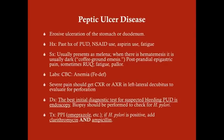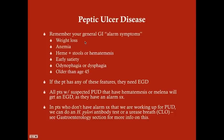Why go straight to EGD rather than a CLO test or urease breath test? Because of GI alarm symptoms: weight loss, anemia, heme-positive stools or hematemesis, early satiety, odynophagia, dysphagia, or a patient older than 45. Any patient with these criteria gets an EGD, and since we're already going in, we may as well do a biopsy — the most accurate test for H. pylori. If a patient suspected of PUD doesn't fit any alarm criteria — say a healthy 28-year-old — you can do H. pylori antibody test or urease breath test rather than going right to EGD.